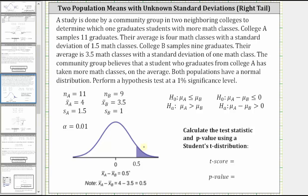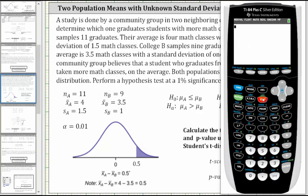And now let's go to the calculator and determine the t-score and p-value. We press stat, right arrow to test, and then select option four to sample t-test. I've already entered the information here, but let's review it. The input is stats. Down. X bar sub 1 is X bar sub A, which is 4. So for college A, the sample mean is 4. Down. The sample standard deviation is 1.5. Down. N is 11. Down.